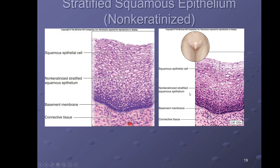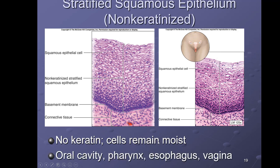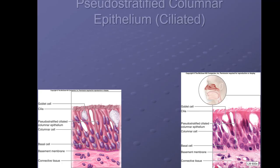The non-keratinized version of stratified squamous looks similar, but there is no keratin. The cells still migrate toward the surface but don't fill with keratin, so the cells are actually still alive when they reach the surface and they are more moist. Great examples include the inside of your mouth, the oral cavity and lining of your cheeks, the pharynx, the esophagus, and the vagina.